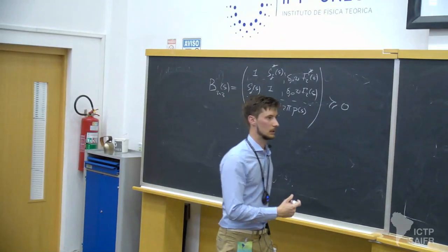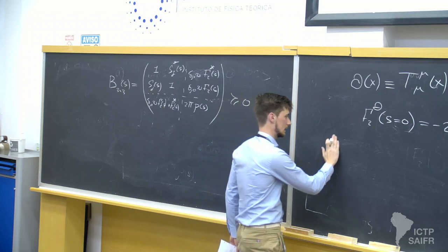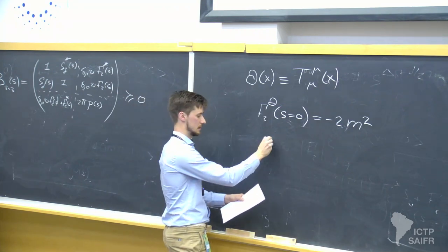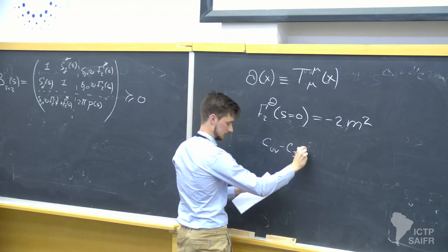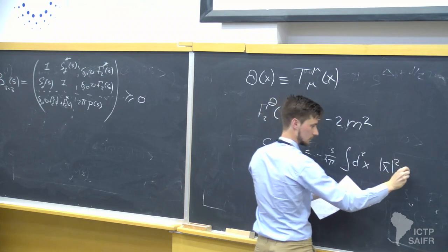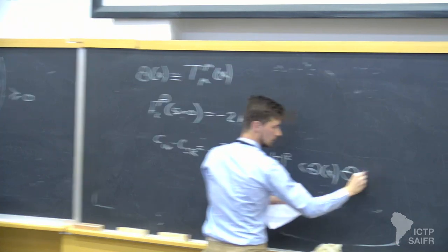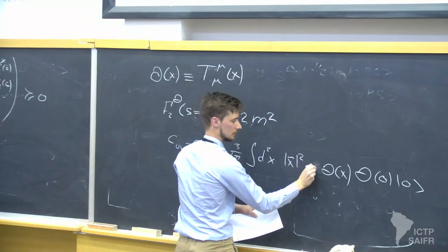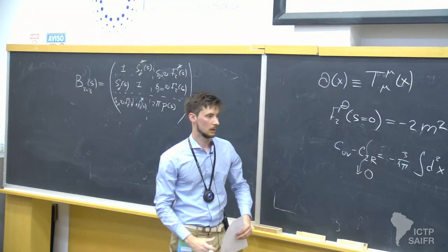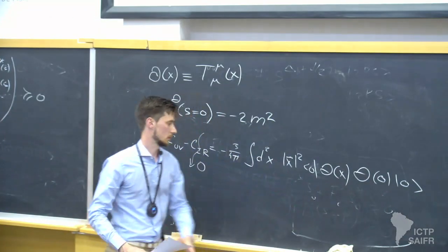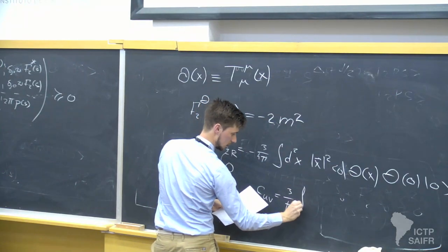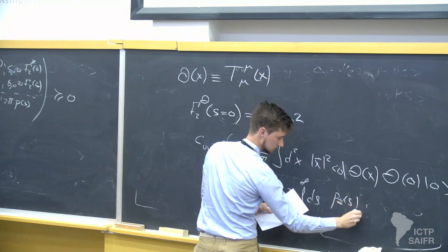Another important property of the trace of the stress tensor in two dimensions is its relation to the C theorem. The C theorem can be written as: the central charge in the UV minus the central charge in the IR equals minus 3 over 4pi times the integral over coordinate space of the two-point function of the trace of the stress tensor. Since I work with theories empty in the IR, this is zero, and the two-point function is related to the spectral density — so finally C_UV equals (3/pi) times the integral from 0 to infinity of dS times rho_theta(S) over S^2.